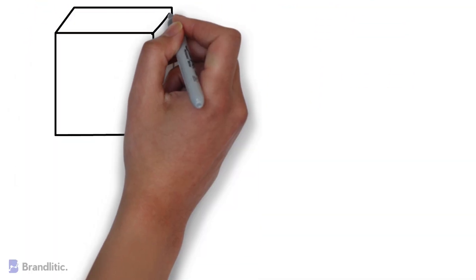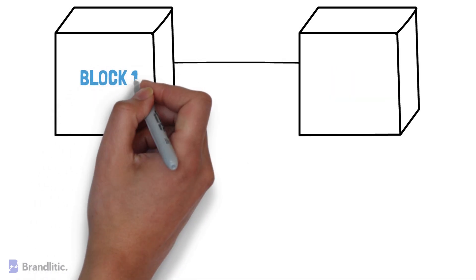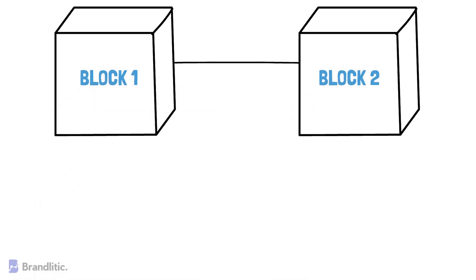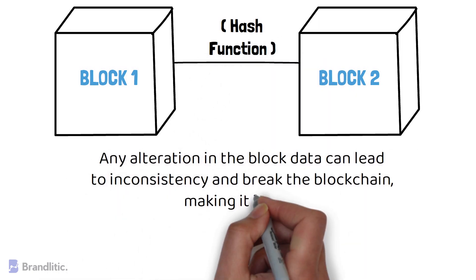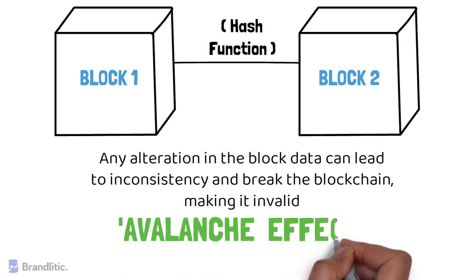Hash functions have a major role in linking blocks to one another and maintaining the integrity of the data stored inside each block. Any alteration in the block data can lead to inconsistency and break the blockchain, making it invalid. This is achieved by a property of hash functions called the avalanche effect. According to the avalanche effect, if we make even a slight change in the input to the hash function, we will end up getting a totally unrelated output compared to the original.